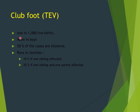Most orthopedic surgeons will see this condition. It is more common in boys than girls, about two to one. Fifty percent of cases are bilateral. The condition runs in families: if one sibling is affected, the incidence rises from 1 in 1000 to 10%, and 25% if one sibling and one parent are both affected.